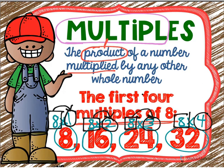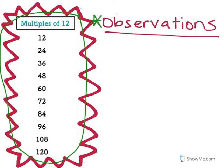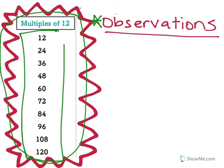On the left-hand side we have a multiples of 12 chart. We're not always going to have this in front of us, so on the right-hand side I have an observations section where I'm going to write down what I notice — what can help me write my multiples of 12. So I'm going to take a look at all these numbers, these multiples of 12.